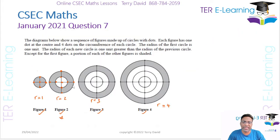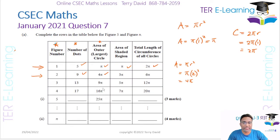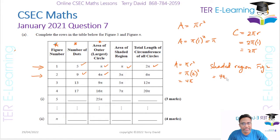For the shaded region in figure two, you take the area of the whole circle and subtract the area of the small inner circle. The area of the small circle is π, so the shaded region for figure two is 4π − π = 3π. That's where the 3π came from.